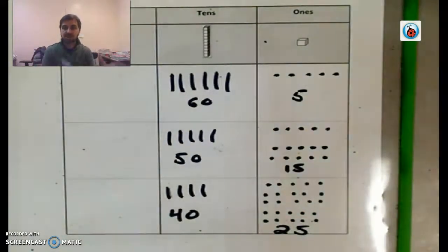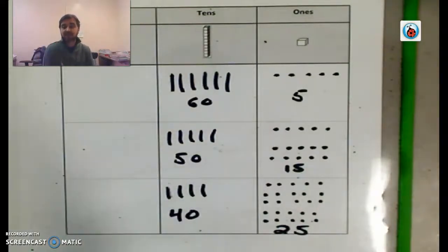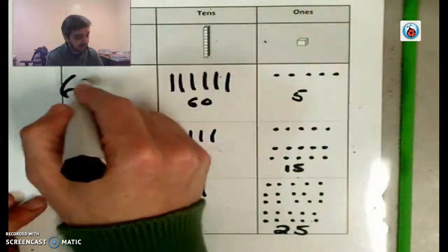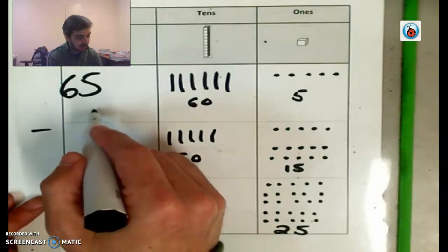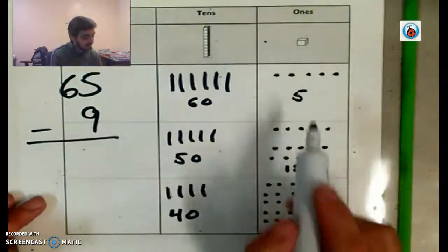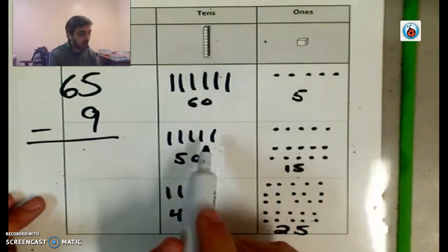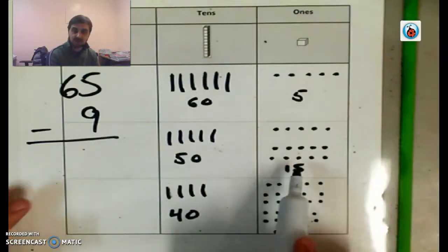So this is called decomposing numbers by place value. Fancy name for a pretty simple concept, right? And the reason we need to know how to do this, boys and girls, as you've been seeing, is sometimes, right, if I had, for example, the number, if I had 65 and I was trying to subtract, let's say, nine, right, I wouldn't have, if I was trying to take nine away from here, I wouldn't have enough Skittles to take away. I'd have to open up one of the bags and turn it into five 10s or 50 and 15 ones.